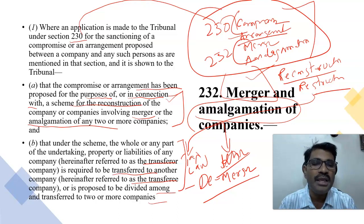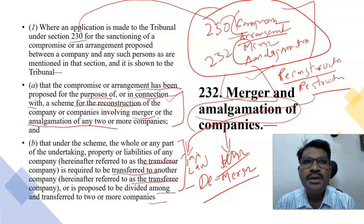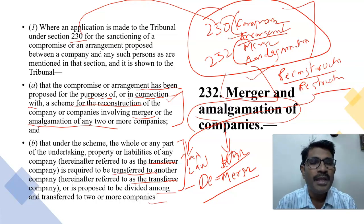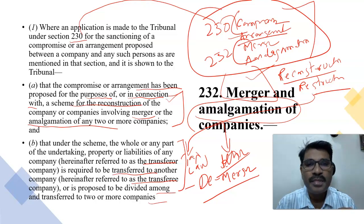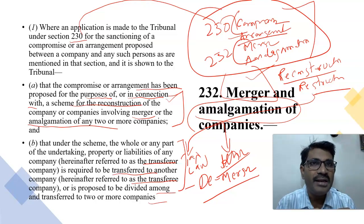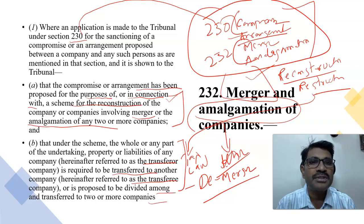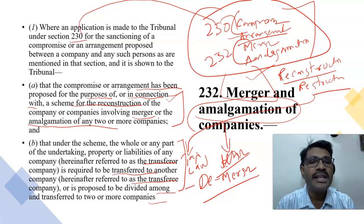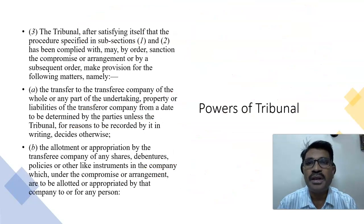Section 232 is called about the merger and amalgamations. If an application is filed under Section 230 asking for the scheme provided in Section 232, the court has the power to sanction the scheme of amalgamations and mergers under Section 232. Let us now see the powers of the tribunal once we file a petition before it. The National Company Law Tribunal (NCLT) is where companies must file, at the jurisdiction prescribed.